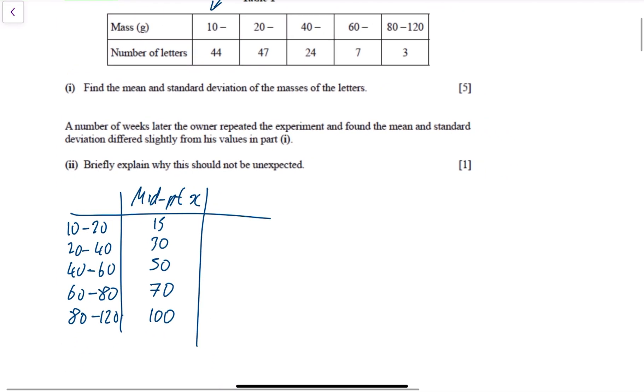And what were the corresponding frequencies? Frequencies were 44, 47, 24, 7, and 3. So these two columns here, this really is all you need for putting this into your calculator.